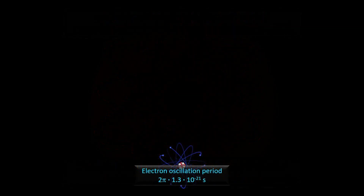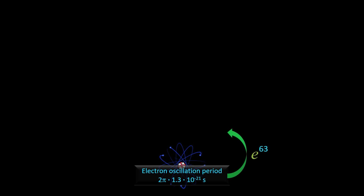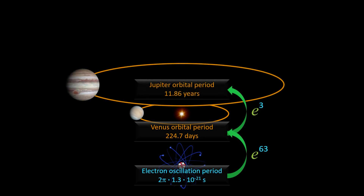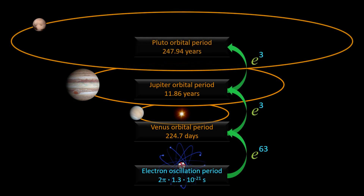If we multiply the electron oscillation period 63 times by Euler's number, we encounter the orbital period of Venus. Scaling up by Euler's number 66 times, we meet the orbital period of Jupiter. And after 69 times scaling up by Euler's number, we meet the orbital period of Pluto. Thanks to Euler's number, every planet avoids not only orbital resonance with other planets but also parametric resonance with all the electrons and protons it consists of. This example shows how Euler's number creates interscalar stability — the stable embedding of subatomic dynamics into planetary motion.